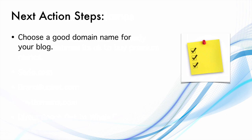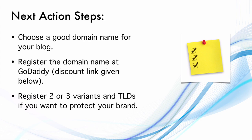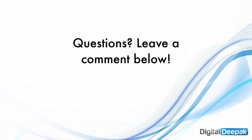Next, action steps: choose a good domain name for your blog. You can search it at name.com, godaddy.com, or any other place, and register it at GoDaddy using the discount link banner below this video. You can also register two or three variants and TLDs if you want to protect your brand — for example, I have bikerboy.com as well as bikerboy.in, so I have the other TLDs just for brand name protection, because you don't want someone else to purchase the other extensions and build a similar brand. If you have any questions, leave a comment below, and let me know what areas need to be covered and I will create more videos. That's it for domain names — see you in the next video!